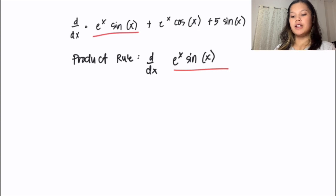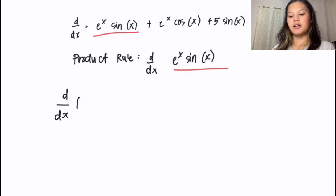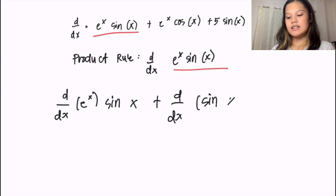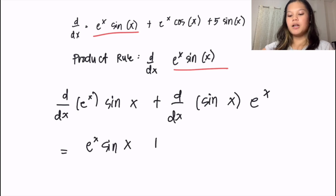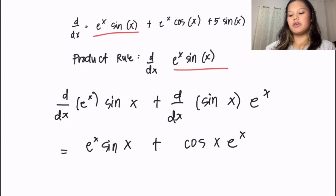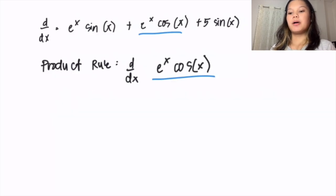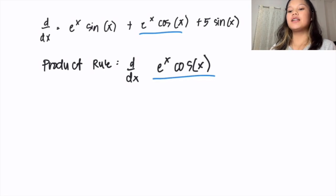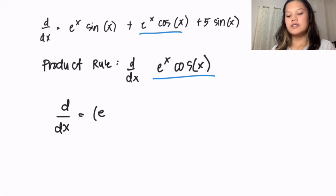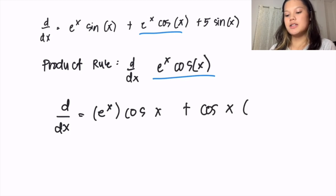In getting the derivative of e to the power of x sin x, we use the product rule. So the derivative of e to the power of x times sin x plus the derivative of sin x times e to the power of x gives us e to the power of x sin x plus cos x times e to the power of x. Next, for e to the power of x cos x, we again use the product rule: the derivative of e to the power of x times cos x plus cos x times e to the power of x gives us e to the power of x cos x minus e to the power of x sin x.